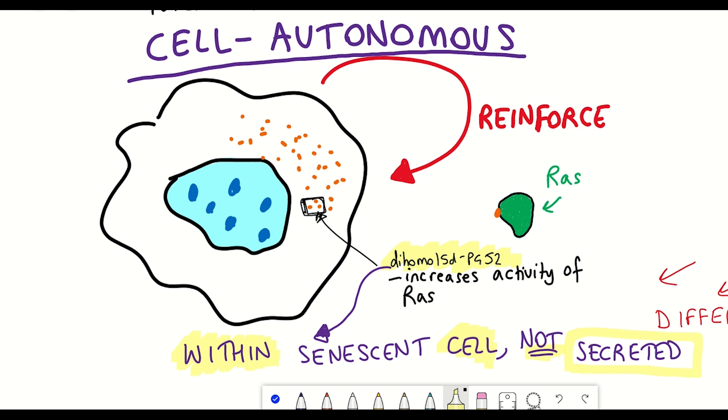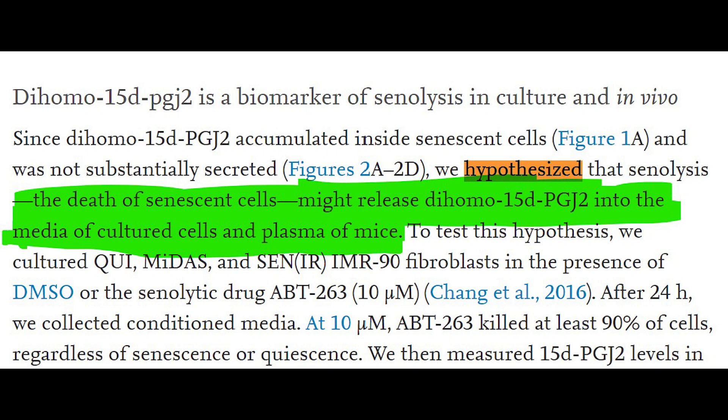And so given this finding, the authors hypothesized that senolysis, the death of senescent cells, might be releasing this dihomo-15d PGJ2. And well, that hypothesis was correct.